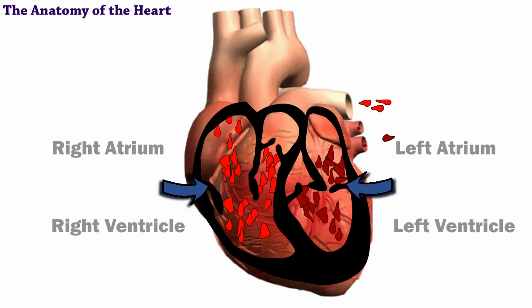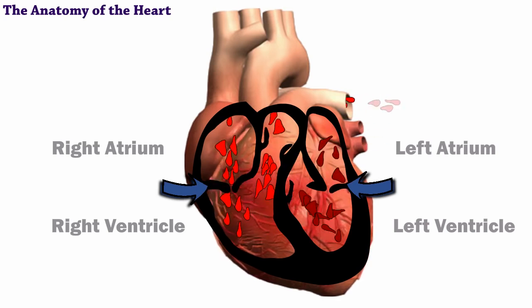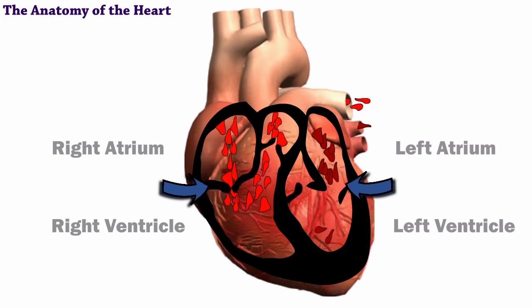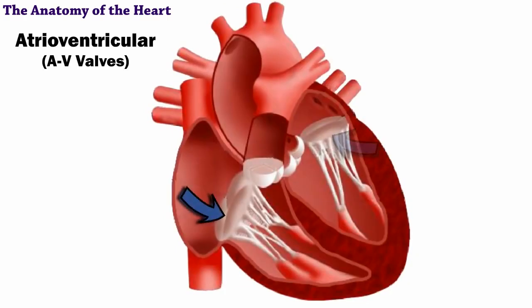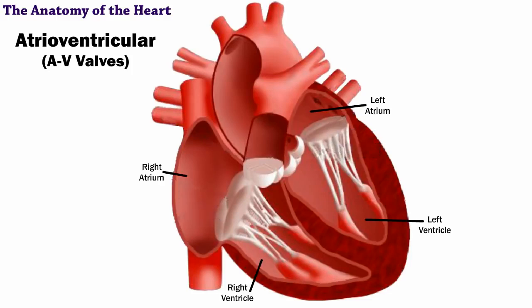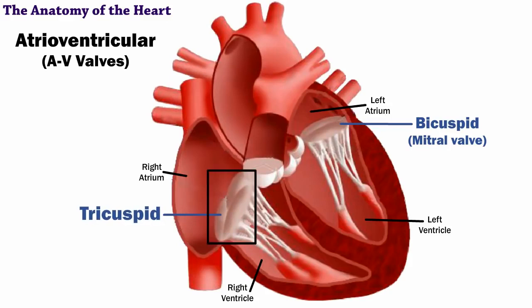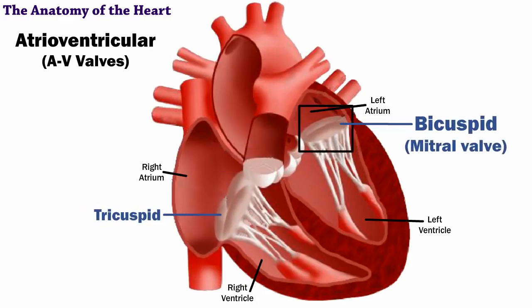Watch as the valves open and close. The atrioventricular, or AV valves, are between the atria and the ventricles on each side of the heart. They are the tricuspid and the bicuspid, or mitral, valve. The tricuspid is on the right side, and the bicuspid, or mitral, is on the left side.